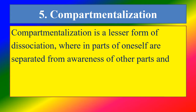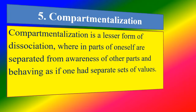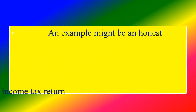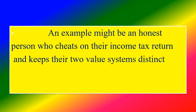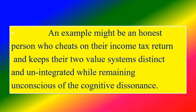Compartmentalization: It is a lesser form of dissociation wherein parts of oneself are separated from awareness of other parts, behaving as if one had a separate set of values. An example might be an honest person who cheats on their income tax return and keeps their two value systems distinct and unintegrated, while remaining unconscious of the cognitive dissonance.